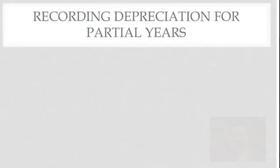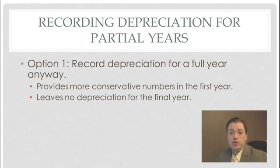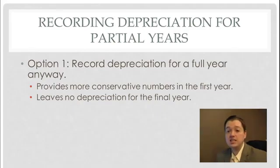FASB has provided us with two options for doing this partial year depreciation. Option number one is that we just record depreciation for a full year anyway. We pretend we bought it on January 1. This is why we're okay making this assumption so often in accounting classes, because it's more conservative, and FASB is usually comfortable with more conservative numbers. Banks like it, investors like it, FASB likes it, at least for now. FASB has moved away a little bit from conservatism to neutrality, but at least for now, there's still this idea that conservative is okay.